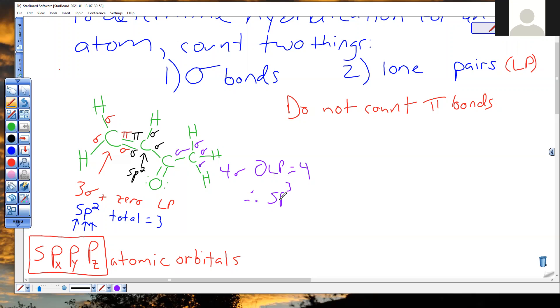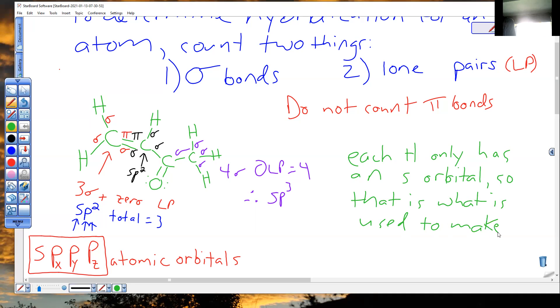So the hydrogens would always be just S orbitals, correct? Because they can only make one bond. Because they make one bond. Very good. Each H only has an S orbital for bonding. S orbital, because it's in the first row, right? That's all it has available. So that is what it uses to make bonds always. That is what is used to make bonds. And you can't hybridize something when there's only one of it, right? So it's not a hybrid in hydrogen's case. It's just an S.